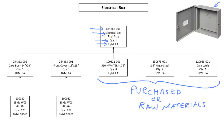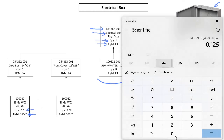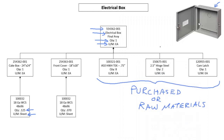For every one cake box, I'm going to reserve a quantity of 0.125 sheets of 18 gauge white coat steel, which is 48 by 96 inches. This 0.125 sheets comes from the part, which is 24 by 24 inches. So 24 by 24 divided by the sheet size of 48 by 96 is equal to 0.125. I reserve 0.125 of this part number here, and its unit of measurement is sheets.